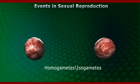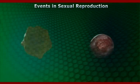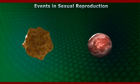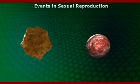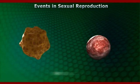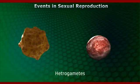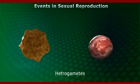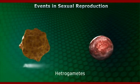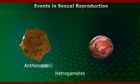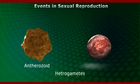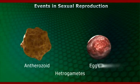However, in a majority of sexually reproducing organisms, the gametes produced are of two morphologically distinct types, called heterogametes. In such organisms, the male gamete is called antherozoid or sperm, and the female gamete is called the egg or ovum.